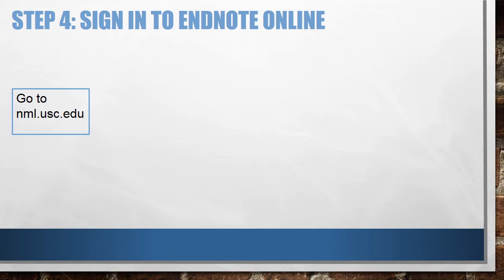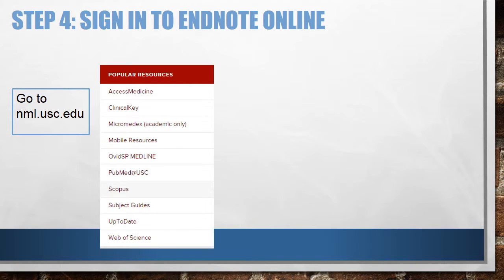Now, log in to your EndNote Online account. Start at the Norris Library homepage. Look for the red Popular Resources box. At the bottom of this box, find a link to Web of Science and click on this link.